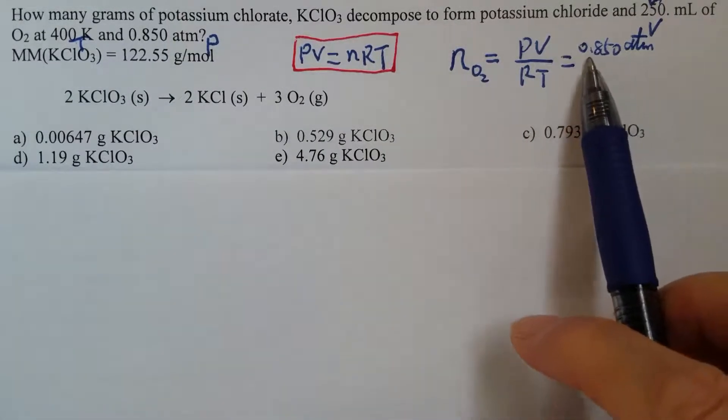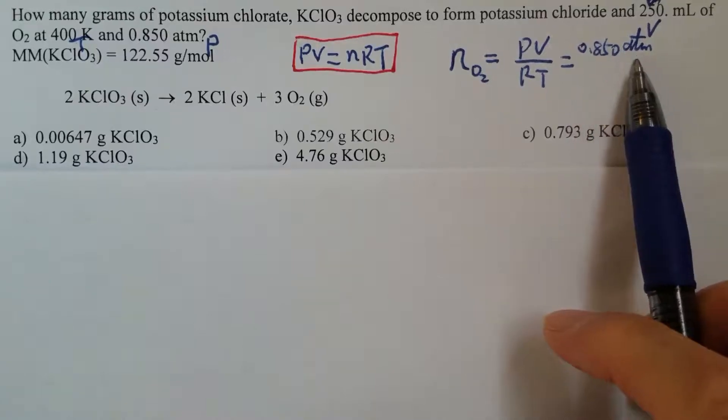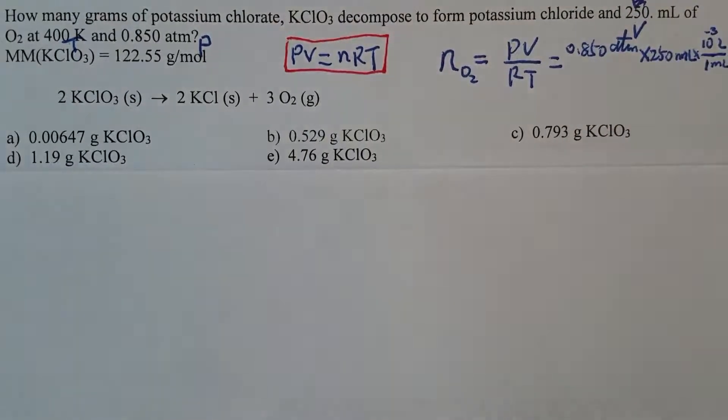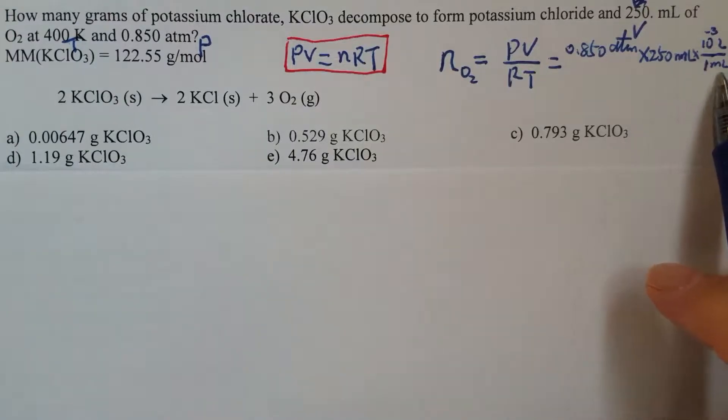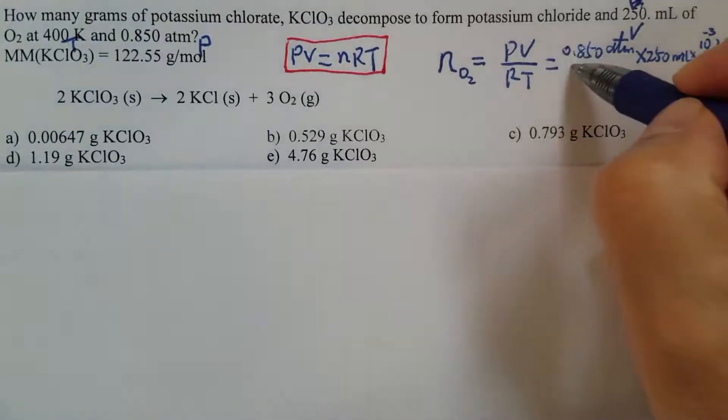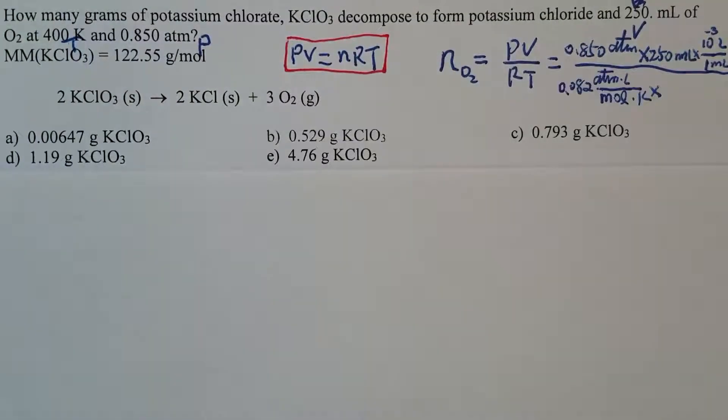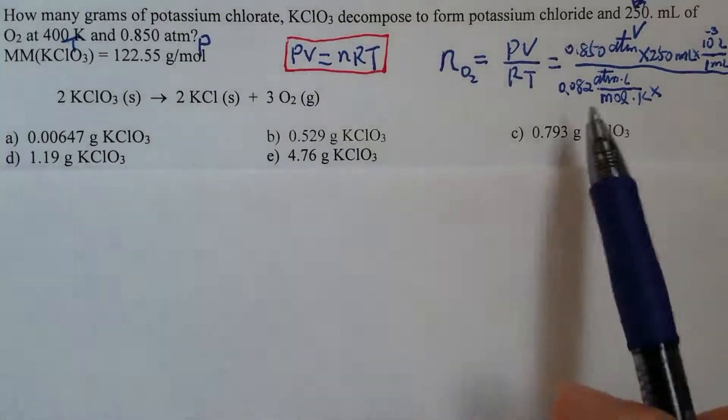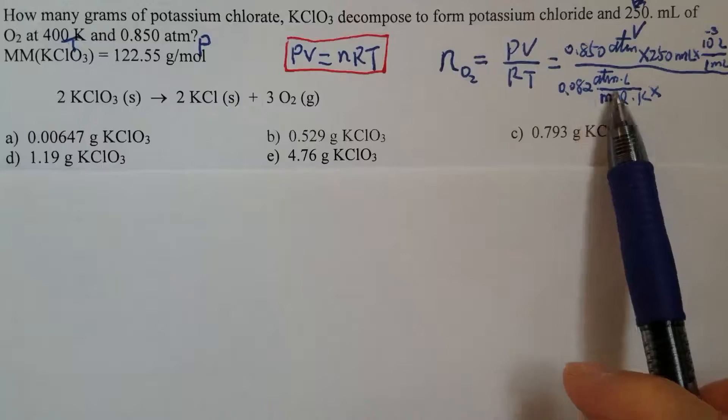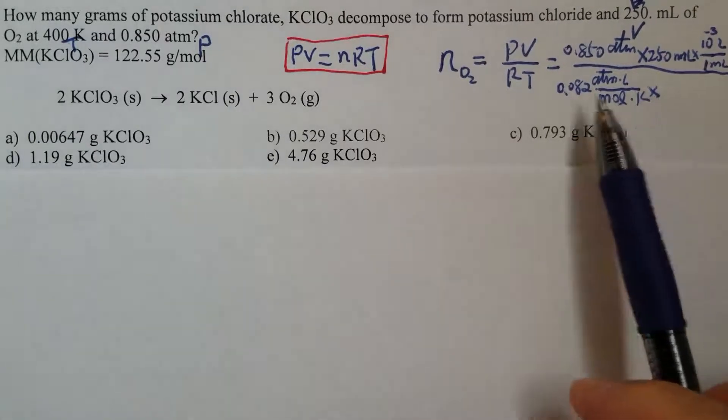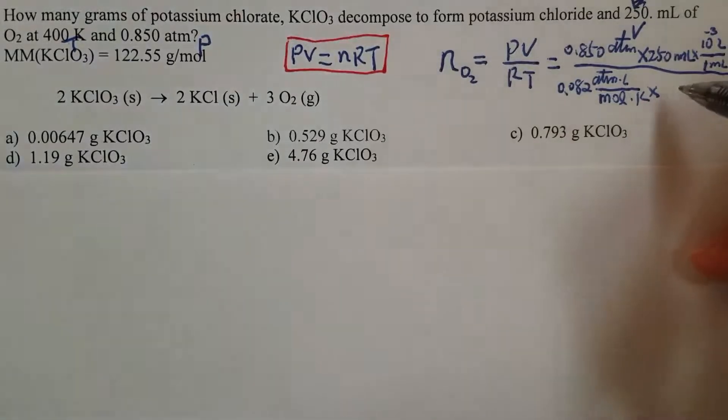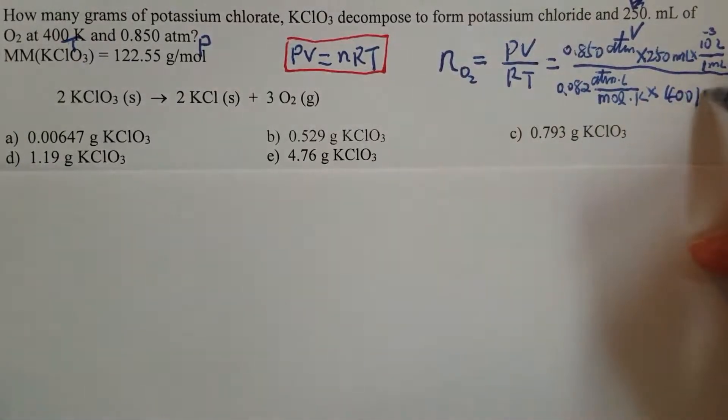Pressure 0.850 atm times volume, convert the 250 milliliters to liters, then divided by the constant R, 0.082. Make sure you use the correct units right here, then times temperature, which is 400 K.